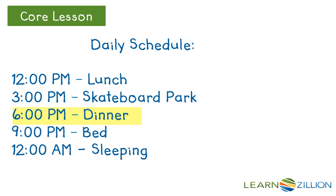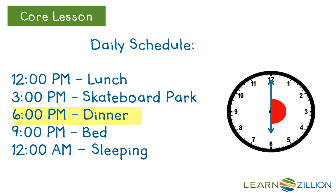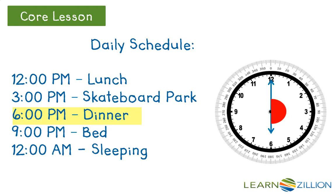Looking at dinner time, I see the clock is showing 6 p.m. The minute hand is on the 12, while the hour hand is on the 6. Each hand looks just like a ray. As the minute hand rotates around the clock, it formed an angle shown in red. That looks just like half of the circle, so it must measure 180 degrees.